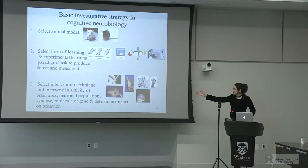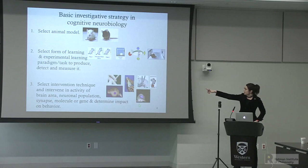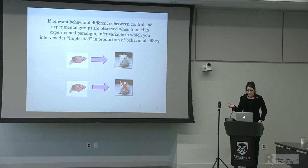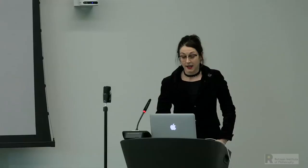A variety of different intervention techniques are used, including lesioning, cannula insertion, IP injection, optogenetic techniques, and gene knockouts. Using this investigative strategy, if you notice the relevant behavioral differences between control and experimental groups trained in an experimental paradigm, then you infer that the variable in which you intervened is implicated in the production of the behavioral effects.